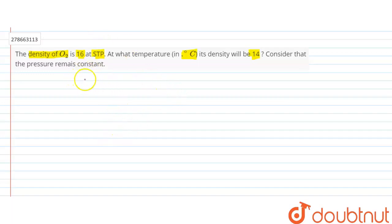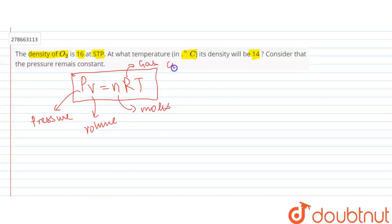We have a formula from the gaseous state chapter: PV equals nRT. Here, P is the pressure exerted by the gas, V is the volume, n is the number of moles of gas, R is the gas constant, and T is the temperature.